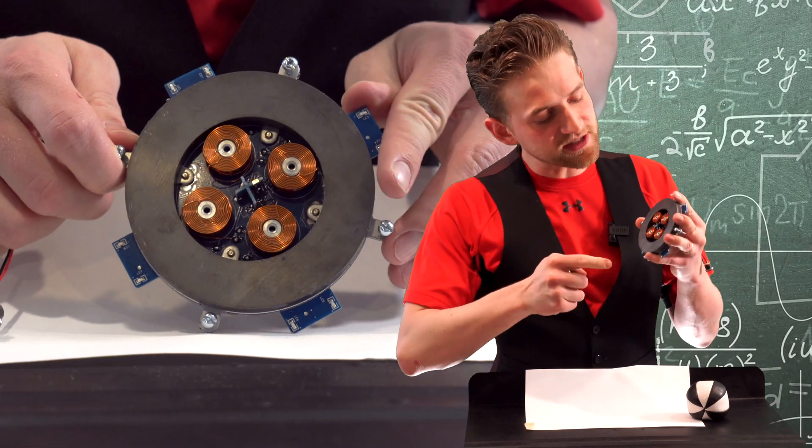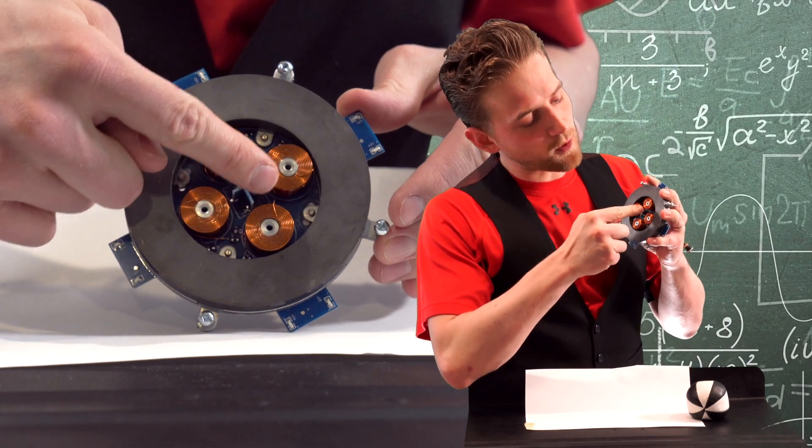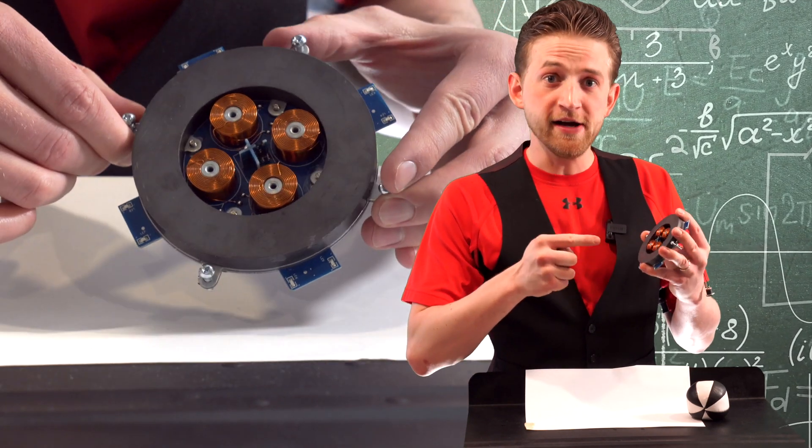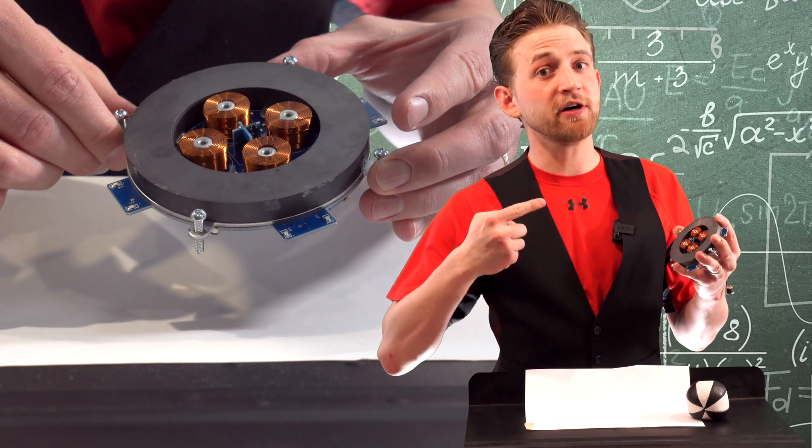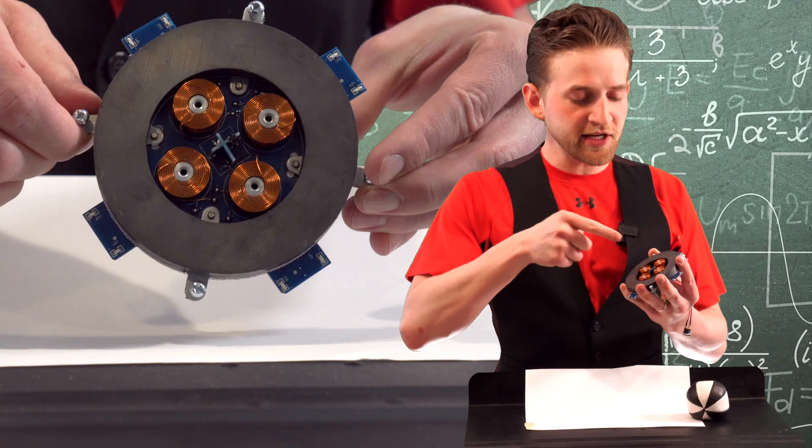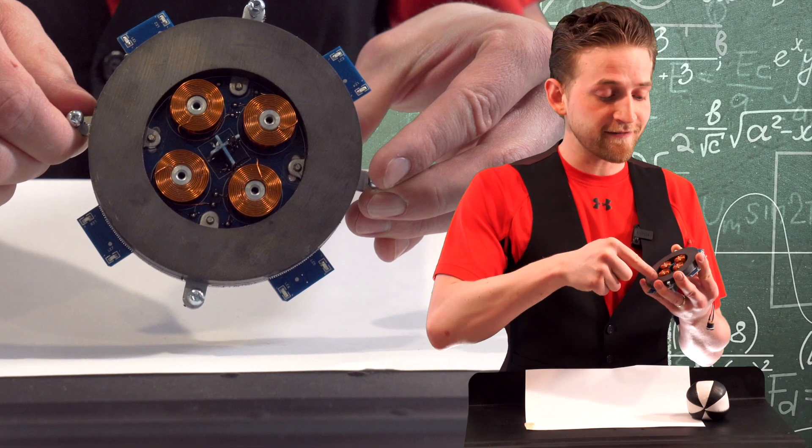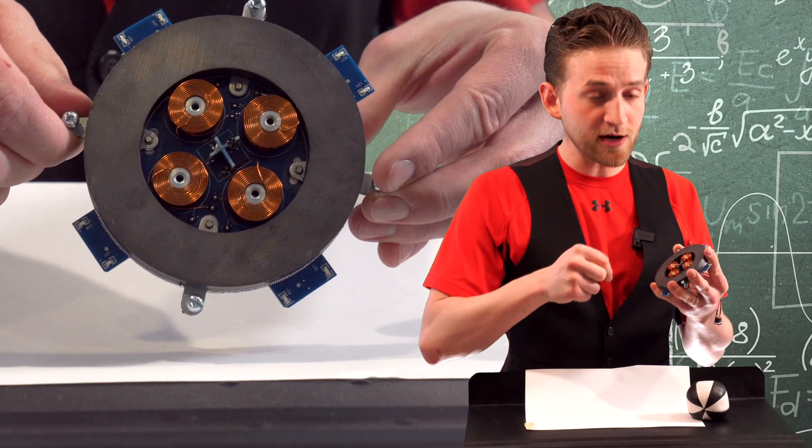Now what's special about this is there are four electromagnets inside of here, and these are just coils of wire that, when you run a current through them, creates a magnet. And these are running in the opposite direction in regards to the poles, as this ring ferromagnet around the outside.